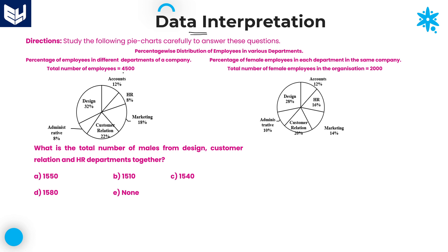First of all, we need to read the information carefully. After that, we need to solve the questions according to the given information. Here the information is about percentage-wise distribution of employees in various departments. The first pie chart gives the percentage of employees in different departments of a company, and the total number of employees is also given — 4500.